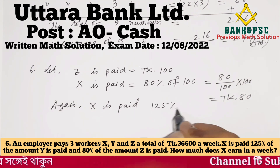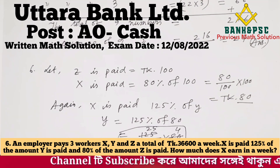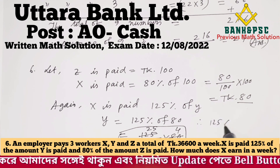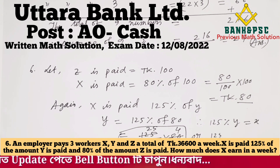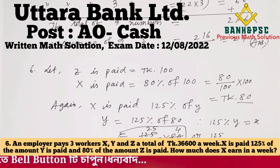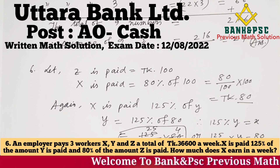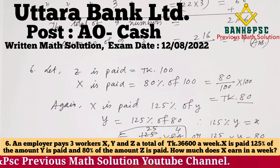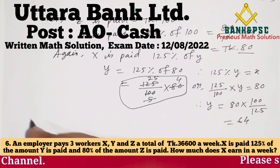X is paid 125% of Y: x = 125/100 x y. So x = 80, meaning y = 80 x 100/125 = 64. Thus x is 80.